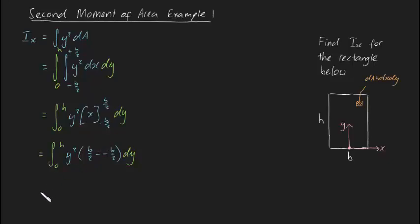This becomes the integral from 0 to h of y² times b dy, which simplifies to b times the integral of y² dy. This is more straightforward—we can evaluate this traditional integral.